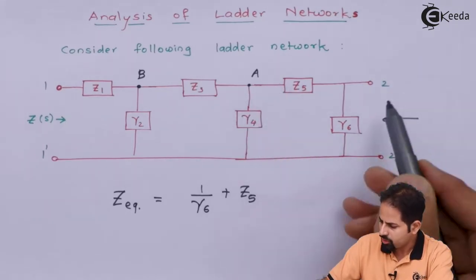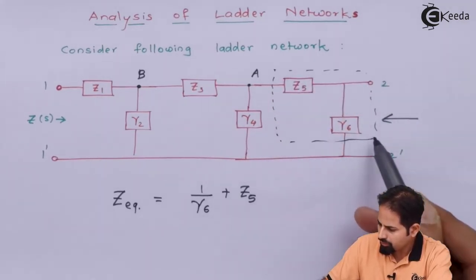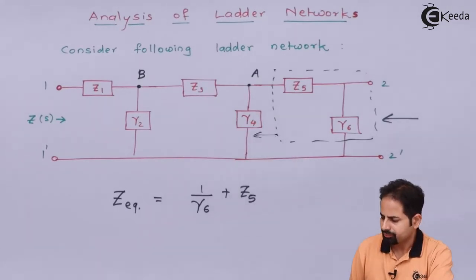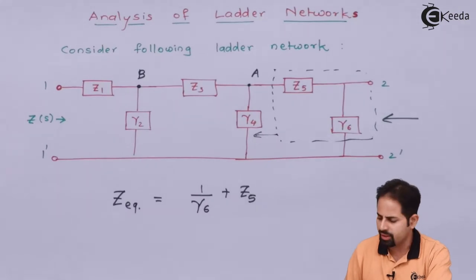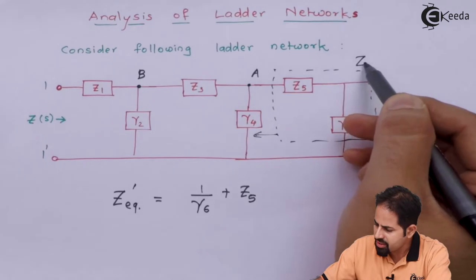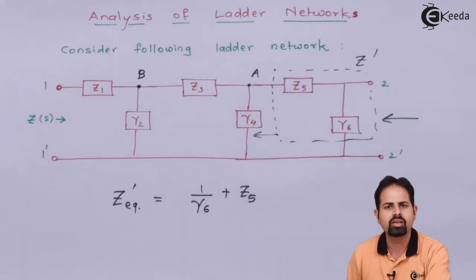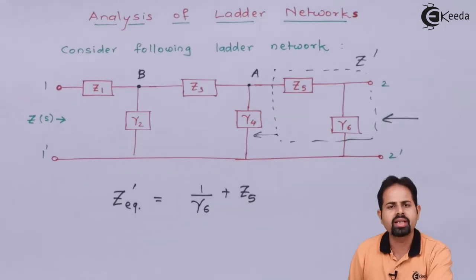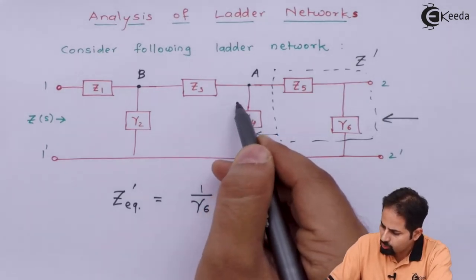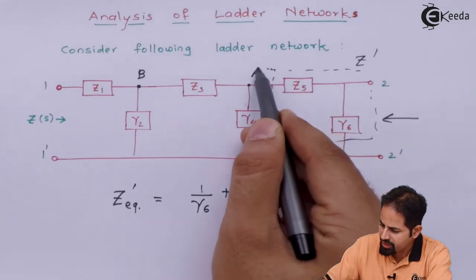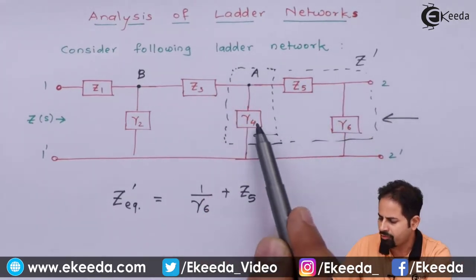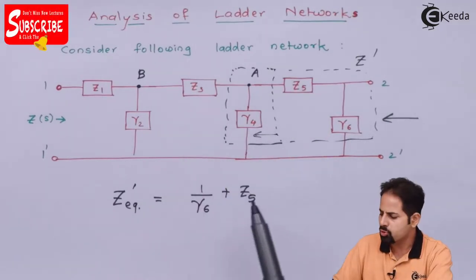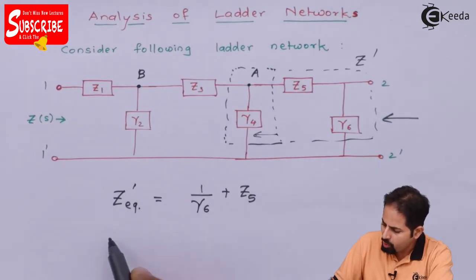Now we will go further. Right now we have covered this much region. Now when you come here, there is again admittance which is Y4. So because it is admittance and already we have calculated equivalent impedance, let us give this name as Z dash. So this Z dash is equivalent impedance which corresponds to this black box. So when it is to be added with this admittance, it is to be reversed or inverse is required. So what is required is 1 upon Z equivalent dash plus Y4. At this point, if you take this Y4 into consideration along with this, if you extend this black box up to this point, so you want to consider all this part Y6, Z5 and Y4, then you will have to reverse this which is to be added with admittance called Y4.